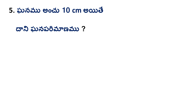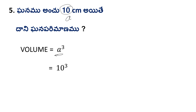Fifth problem: the side (bhuja) is given in centimeters. The volume formula is a³, so V = a³. The answer is in cubic centimeters.